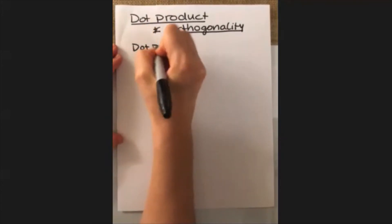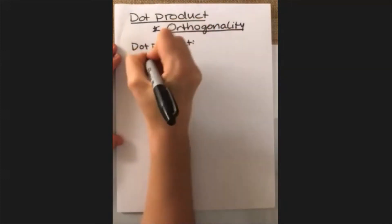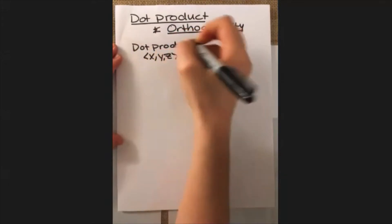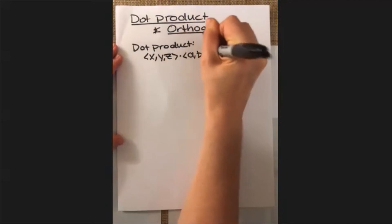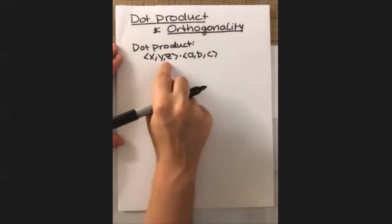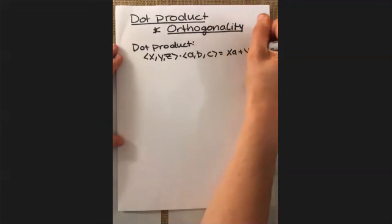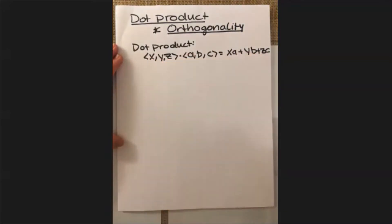So the dot product is very simple. When we're working with two vectors, suppose in this case that maybe it has three components, it's denoted with that little dot right there. So you have two vectors, three components x, y, z, and a, b, c, then the dot product is equal to x times a plus y times b plus z times c. So all you do is just match the components, multiply them together, and add them up.